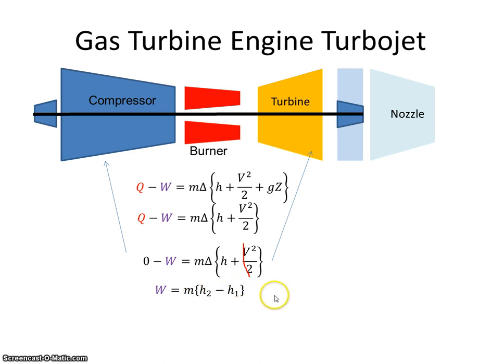And we know from a previous video that the change in enthalpy is equal to Cp times T2 minus T1. So the work done is mCp(T2 - T1).